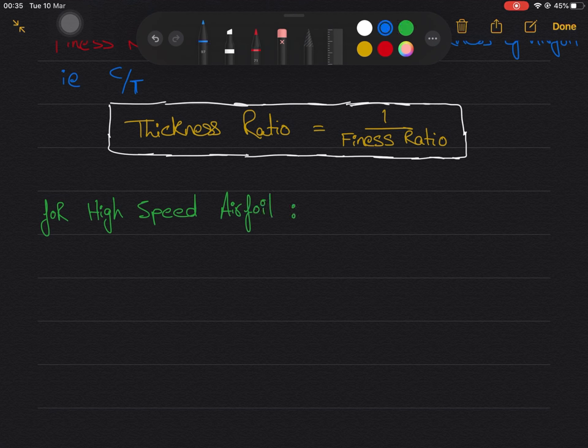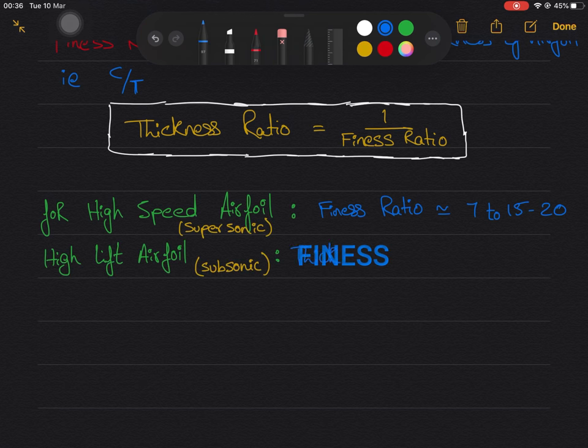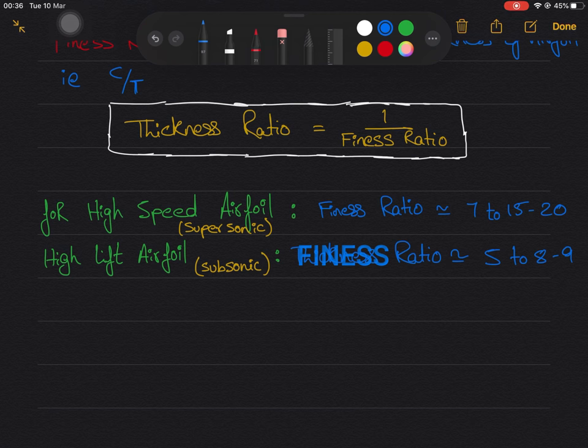For some high speed airfoils, fineness ratio goes up to 15 to 20. Whereas for high lift airfoils, fineness ratio goes up to 8 to 9 and max 10.